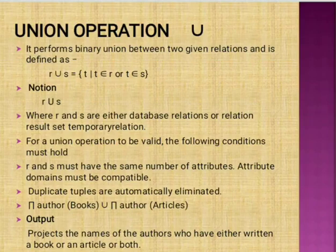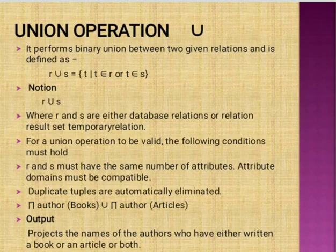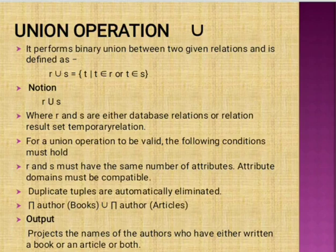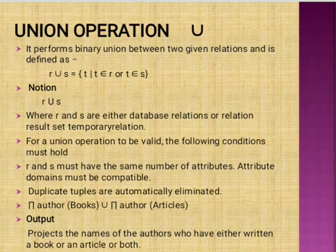Union operations perform a binary union between two given relations, defined as R union S, where R and S are relations. The result equals all tuples T such that T belongs to R or T belongs to S. R and S are either database relations or result temporary relations. For a union operation to be valid: R and S must have the same number of attributes, and attribute domains must be compatible. Duplicate tuples are automatically eliminated.